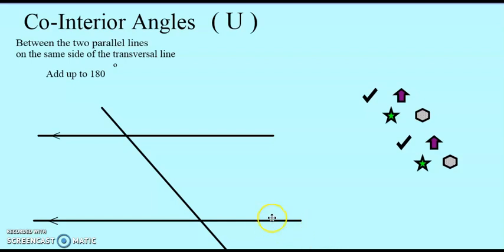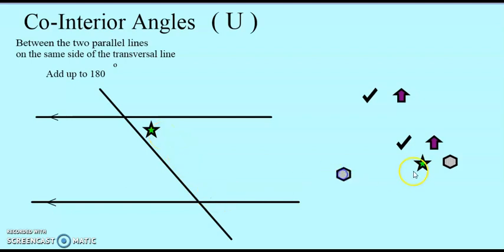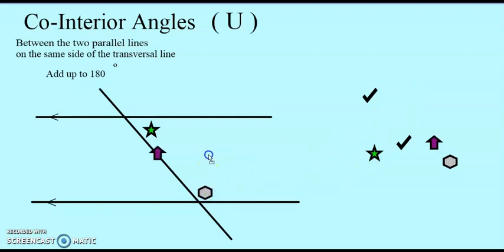Co-interior angles are angles that add up to 180 degrees. They must be between the parallel lines but on the same side of the transverse line. So that angle and this angle are on the same side of the transverse line — they are not equal to each other, which is why I use a different marker. That angle and this angle will add up to 180 degrees because they are between the parallel lines and on the same side of the transverse line.